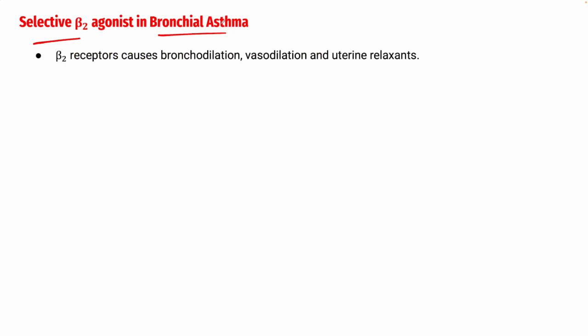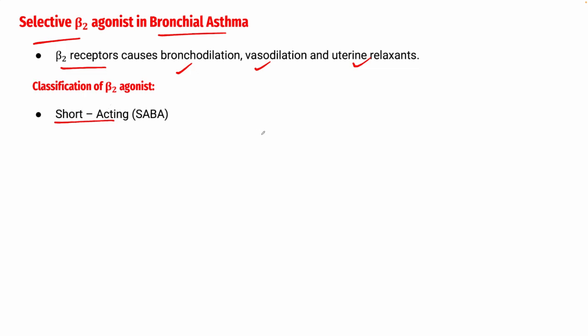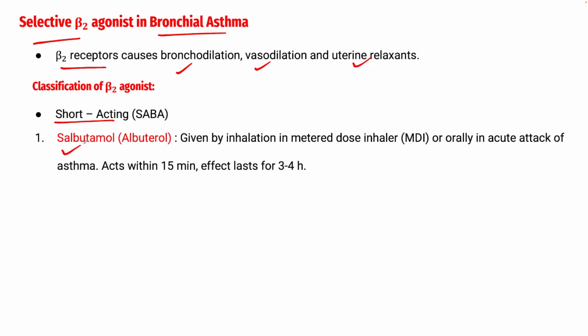Next are selective beta-2 agonists used in bronchial asthma, causing bronchodilation, vasodilation, and uterine relaxation. The classification includes Short-Acting Beta-2 Agonists (SABA). The first SABA is salbutamol, also known as albuterol, given via metered-dose inhaler (MDI) or orally in acute asthma. It acts within 15 minutes and the effect lasts three to four hours. An MDI is a small device that delivers a measured amount of medication to the lungs.